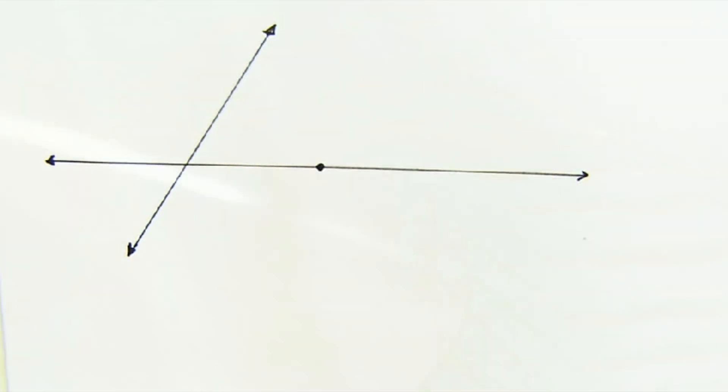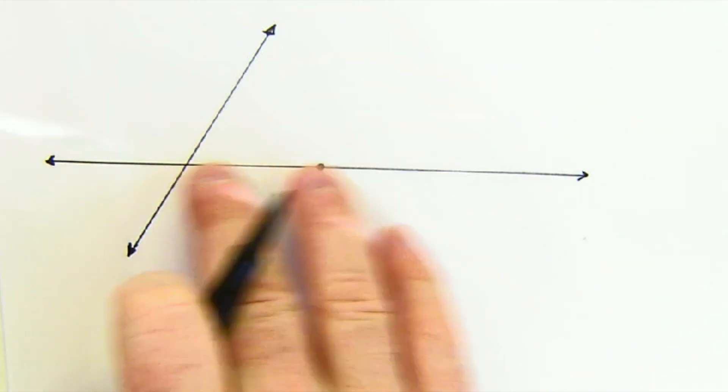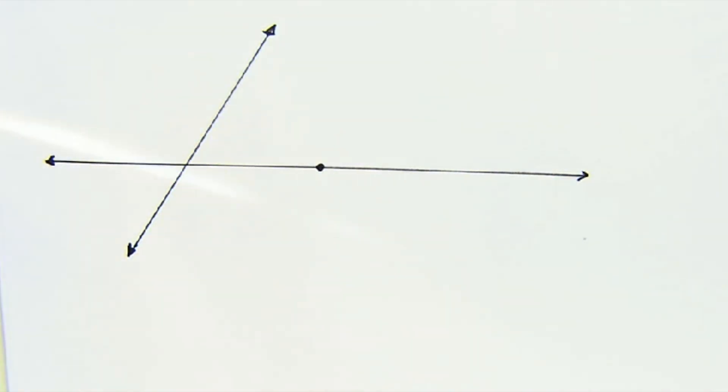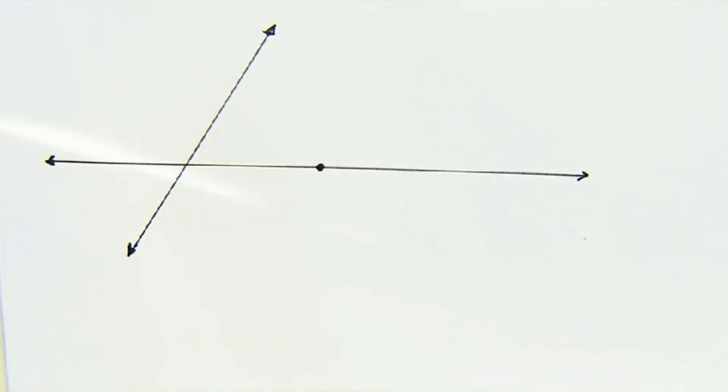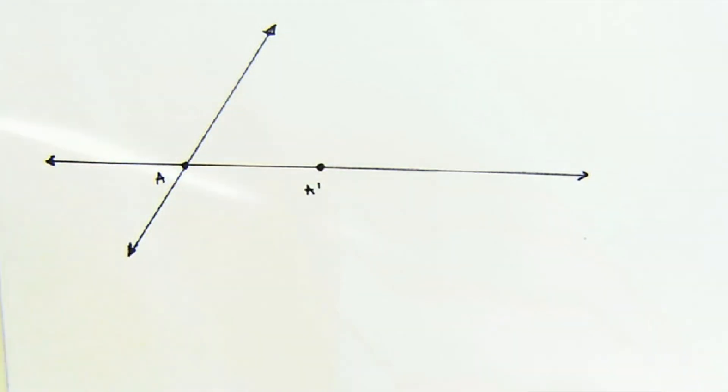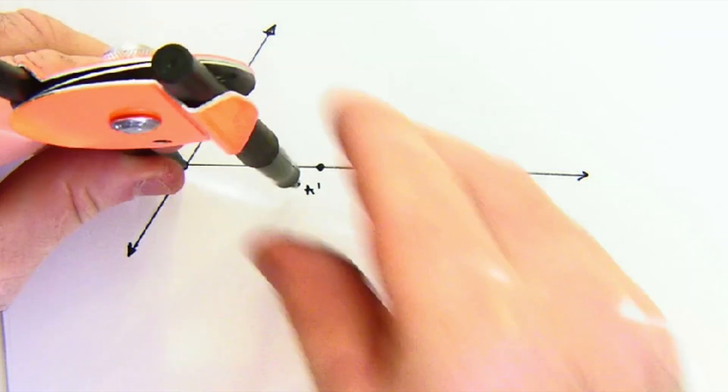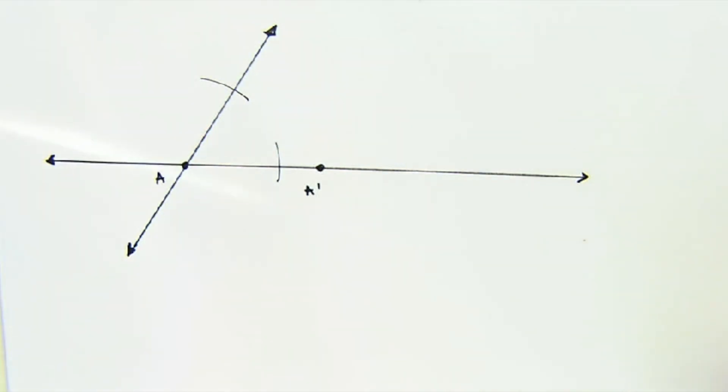What we're going to do is basically copy an angle. To be parallel it has to be the same angle to this line here. So I'm going to, let's see, I guess we'll just do it this way. Think of it as this intersection being A and A prime. And what I'm going to do is I'm going to form two points on my original angle.